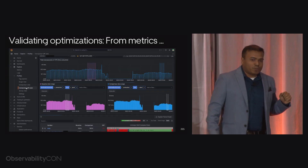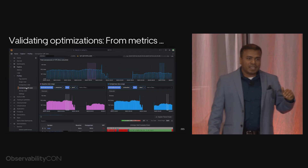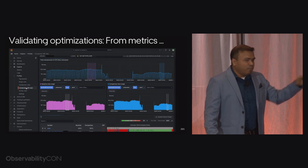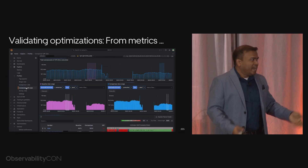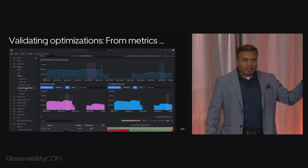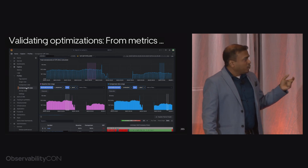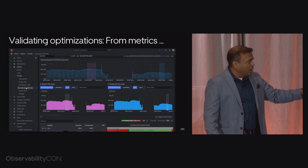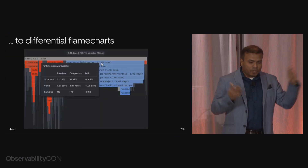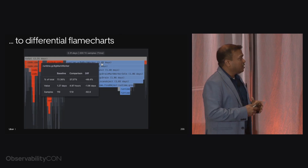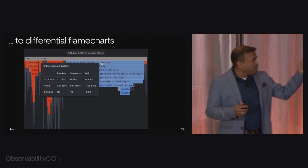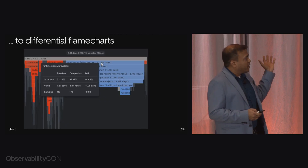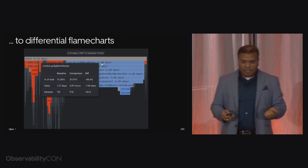This is the Pyroscope UI. What you see in the metric chart is the CPU utilization before the optimization, then a gap when the service is getting redeployed, and after that you see the lower metric value. What Pyroscope allows you to do is select a section in the metric chart, and below you see flame charts — a differential flame chart, which shows and confirms that there was a 48% improvement. This is how you go from metrics to differential flame charts, making debugging super simple.